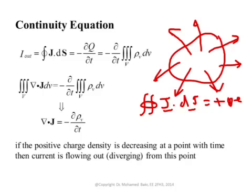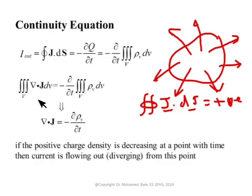Current by definition is the rate of change of charge. Because the current is flowing out, the charge Q inside must be decreasing with time — this is why we have the negative sign. If we have a positive current, then dQ/dt must be negative. The total charge is the integral over the volume of rho_v dV. Using the divergence theorem, we replace the surface integral of J dot dS by the volume integral of divergence J, and equate both sides to get: divergence J equals minus partial rho_v partial T. This is the continuity equation.